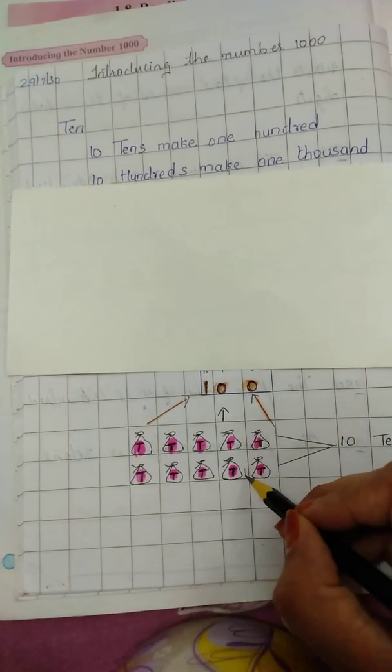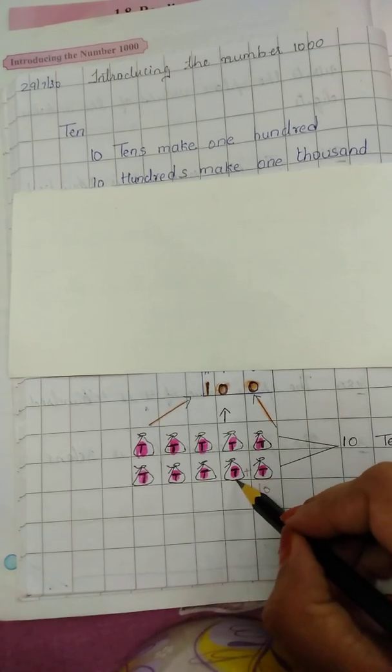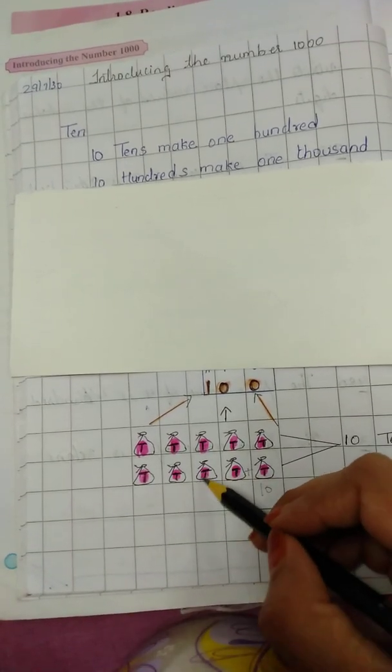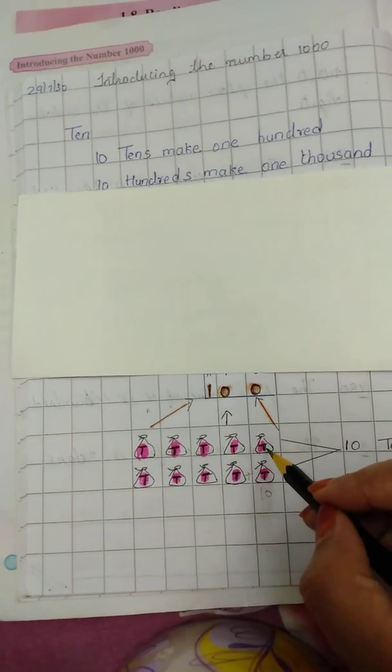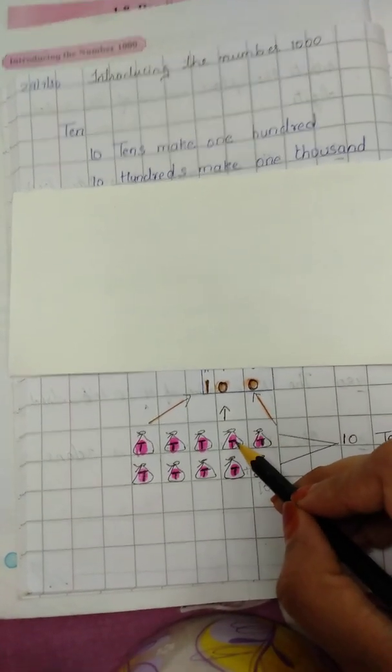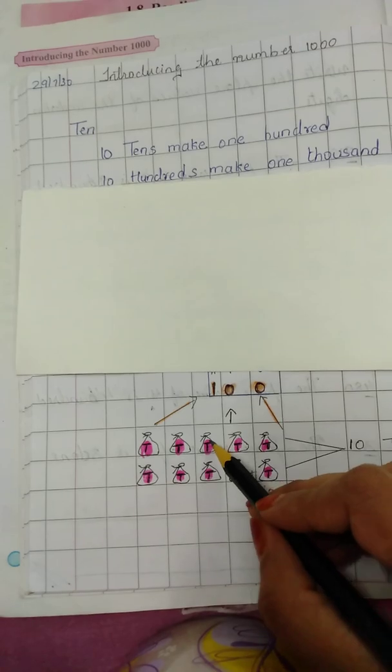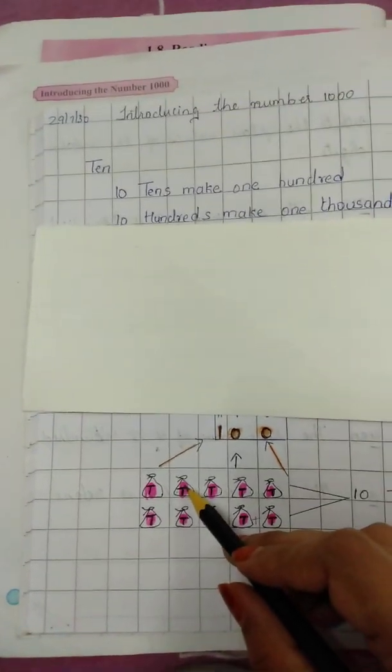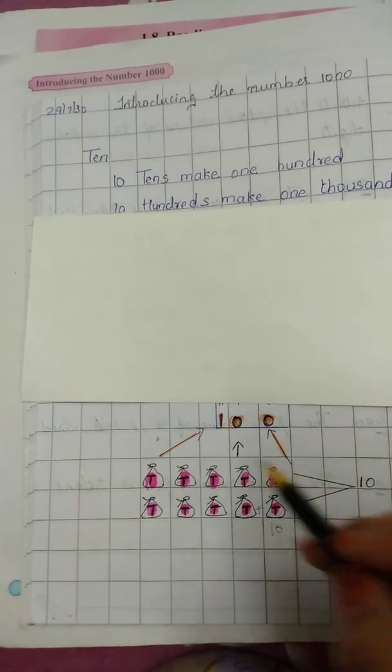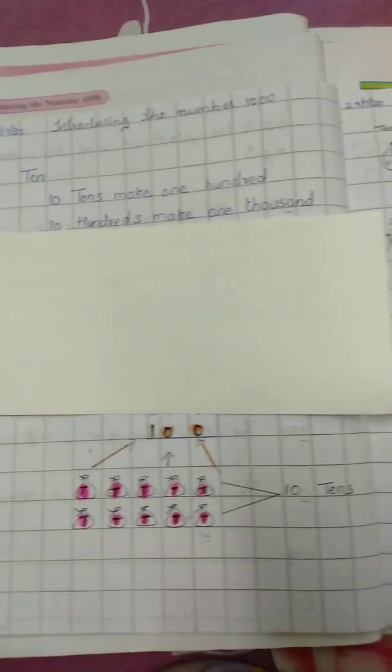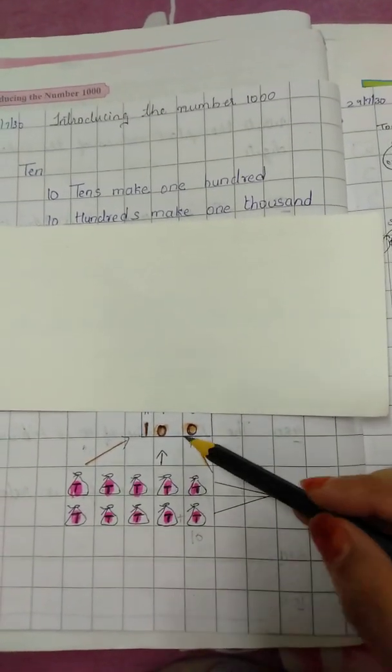Toh har 10 mein ab usko count karte jaayein. 10, 20, then 30. 30 plus 10 is 40, 40 plus 10 is 50, 50 plus 10 is 60, 60 plus 10 is 70, 70 plus 10 is 80, 80 plus 10 is 90, and 90 plus 10 equals 100. So how many tens make 100? It is 10 tens that make 100.